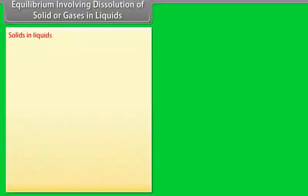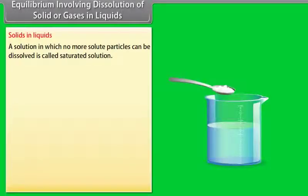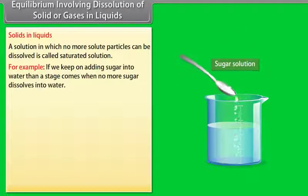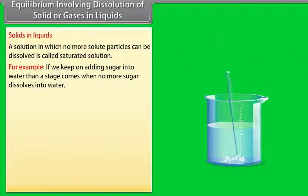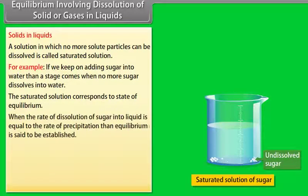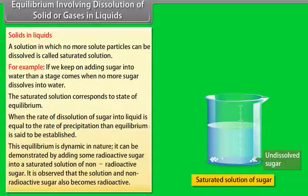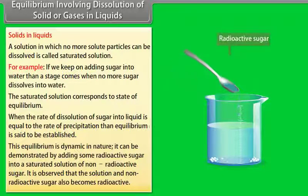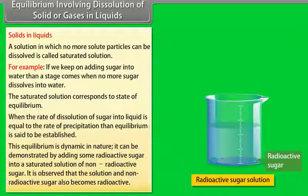Equilibrium Involving Dissolution of Solid or Gases in Liquids — Solids in Liquids. A solution in which no more solute particles can be dissolved is called a saturated solution. For example, if we keep adding sugar into water, a stage comes when no more sugar dissolves. The saturated solution corresponds to a state of equilibrium, when the rate of dissolution of sugar into liquid is equal to the rate of precipitation. This equilibrium is dynamic in nature, demonstrated by adding radioactive sugar into a saturated solution of non-radioactive sugar — the solution and non-radioactive sugar also become radioactive.